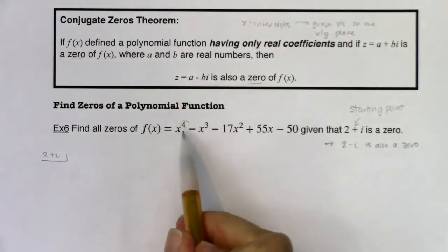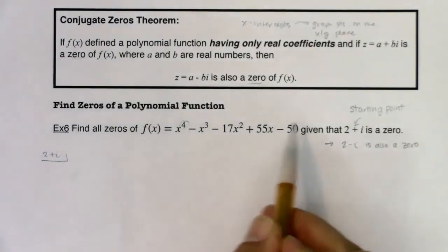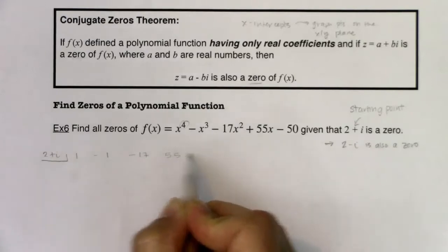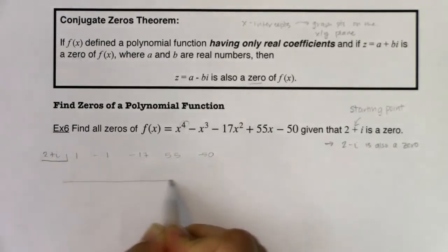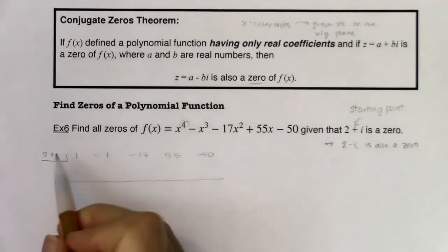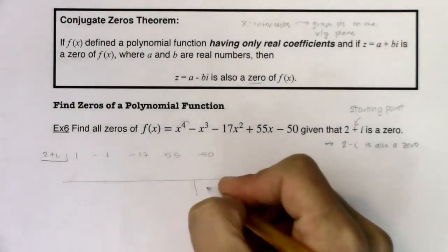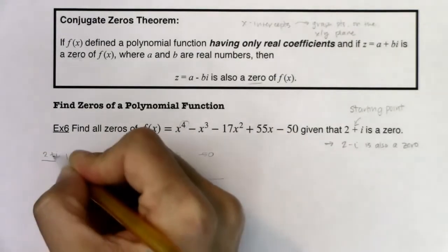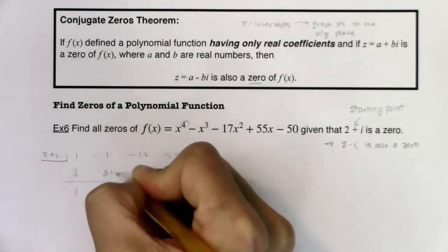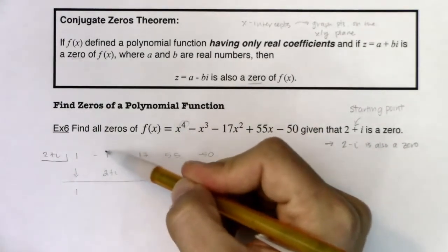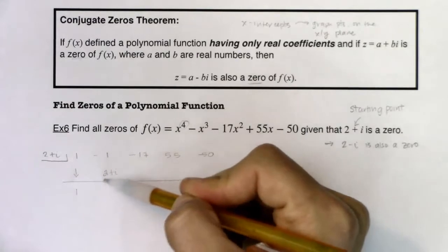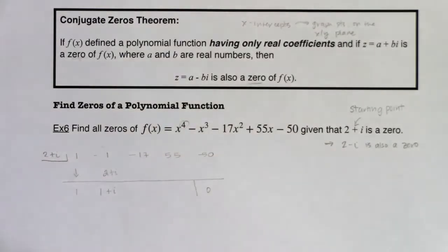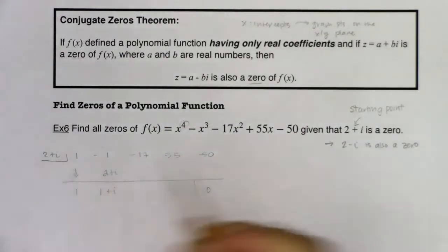Let's look at our coefficients. Just taking a look at the powers on x: four, three, two, one, zero — I'm good. Let me put the coefficients; I don't need a placeholder. Synthetic division is going to work the exact same way, but it is trickier when you have a complex zero. I should get zero — that's what I was told. Two plus i was a zero. The one comes down. One times two plus i is two plus i. Adding these terms: negative one plus two plus i — you add like terms, so negative one plus two is one, and zero i plus i is i. The next thing I need to do is multiply two plus i times one plus i.